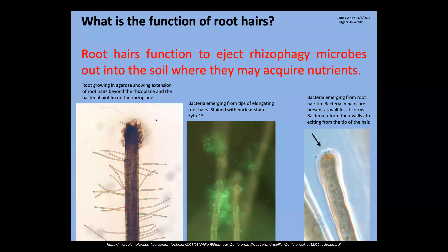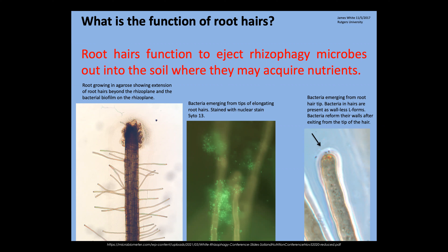Dr. White's research showed tomato seedlings without PGPR did not develop normal roots — no root hairs, and they looked dark brown because the reactive oxygen species damaged the root itself with nothing to work on. The plant squeezes out the nutrition and spits them back out into the soil. Those microbes are good at extracting nutrition from the soil, so the cycle repeats — the witch captures them, squeezes them, eats them, spits them back out to go mine some more.